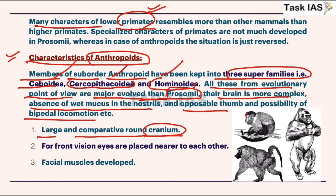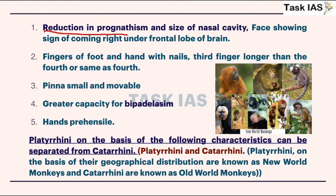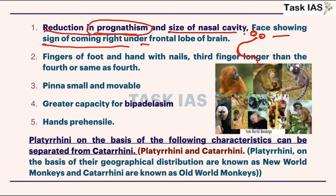Anthropoids have a large and comparatively round cranium, showing their brain is more rounded. For front vision, eyes are placed nearer to each other, whereas in prosimians they are laterally placed. Facial muscles are developed. There is a reduction in prognathism — if this snout or outer prognathism part is reduced, the capability of vision improves because extra prognathism creates hindrance in watching spatially nearer objects.